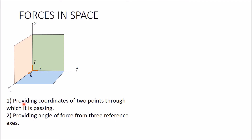Today we discuss the first method: providing coordinates of two points through which the force passes. Assume point A with coordinates (1, 2, 3) — meaning its distance from the yz-plane towards x is 1, from the xz-plane towards y is 2, and from the xy-plane towards z is 3. Another point B has coordinates (5, 7, 2), meaning its distances from the yz, xz, and xy planes are 5, 7, and 2 respectively.